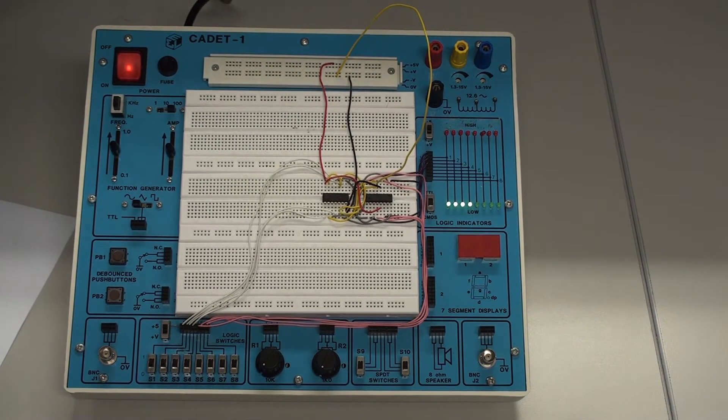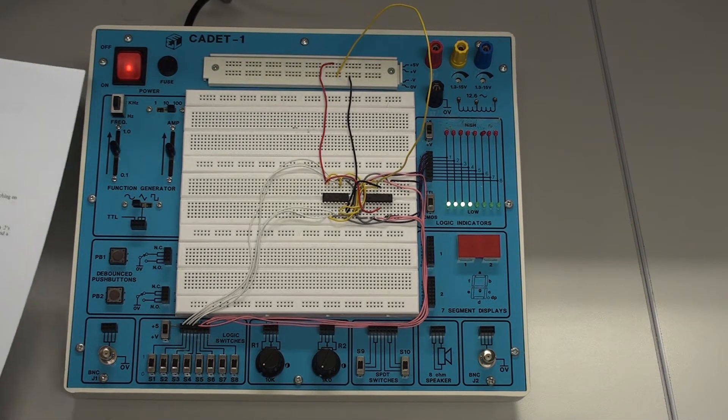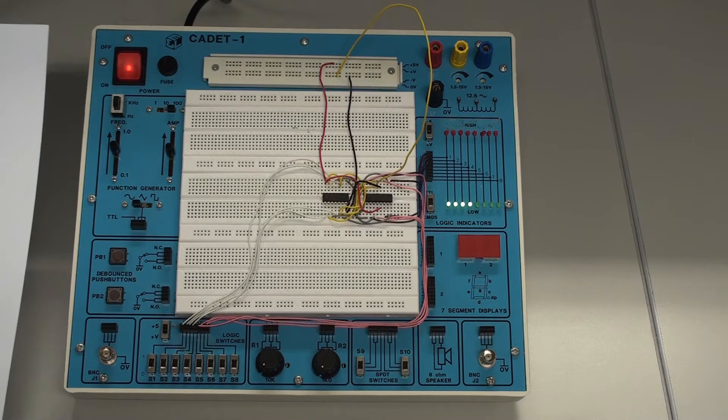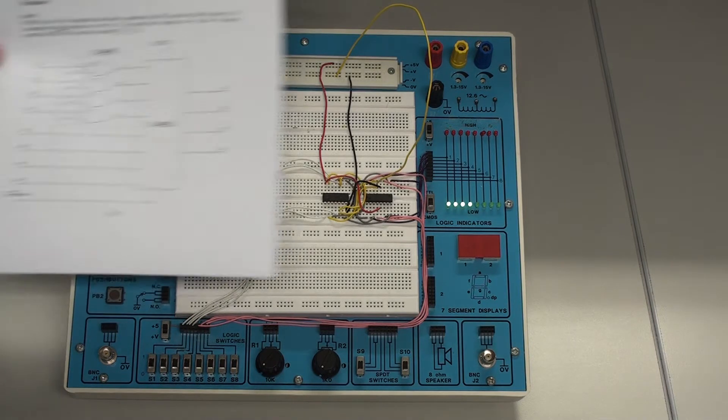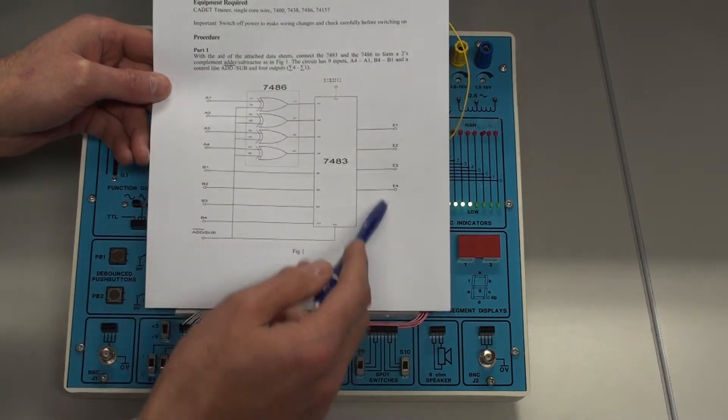Okay, this is experiment D2. So part one of D2 is where you need to construct an adder subtractor using only the 7483 adder and the 7486 exclusive OR gate. So that's the experiment there, the arrangement in that circuit.